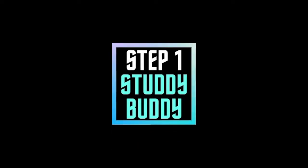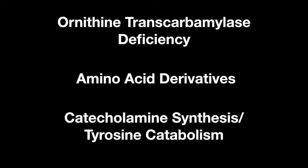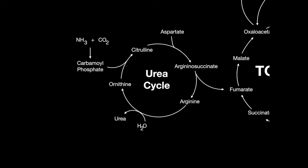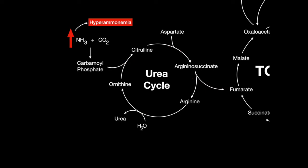Welcome to the Step 1 Review Study Guide. In this lesson, we learn about ornithine transcarbamylase deficiency, the amino acid derivatives, and specifically catecholamine synthesis and tyrosine catabolism. A deficiency in any one of the enzymes involved in the urea cycle can keep the body from being able to metabolize ammonia into urea where it can be excreted. This leads to hyperammonemia. The most common enzyme deficiency that causes this is a deficiency in ornithine transcarbamylase.